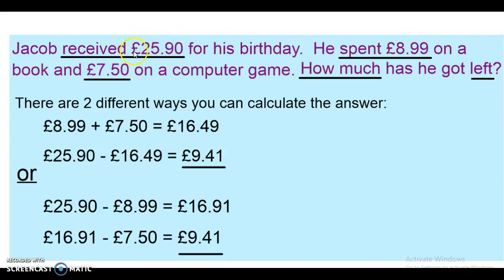If we move on to the next slide, you can see here I've underlined the important information just like you would usually do in any word problem. There are two different ways that you could have worked this out. Both will end up with the correct answer. In some problems that you will do, there will only be one method to work out. It just so happens that there are two different ways to do this one. What you could have done to start with is added together both of the amounts that he spent. So, the £8.99 on a book and the £7.50 on a computer game, which total £16.49. You could have then taken that amount that he spent away from that £25.90 that he started with, and that will leave you with the £9.41, which is the answer, how much he's got left.